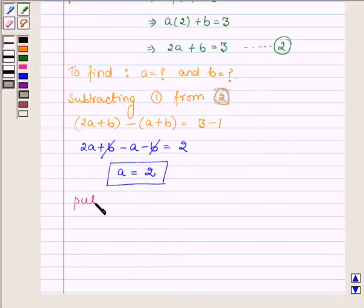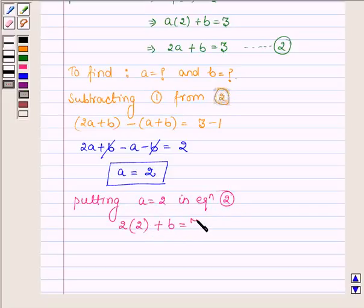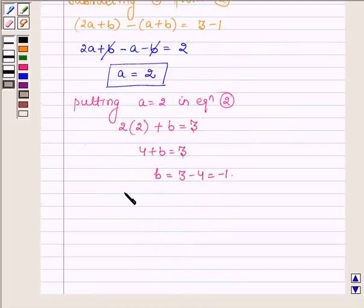Now putting a = 2 in equation number 2, we have 2(2) + b = 3, which implies 4 + b = 3, or b = 3 - 4 which is equal to -1. And thus b = -1.